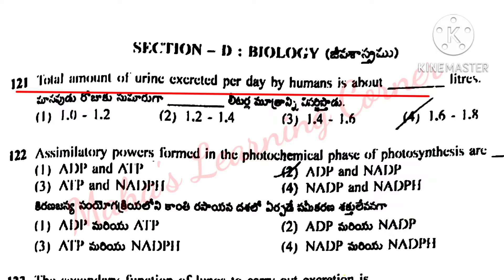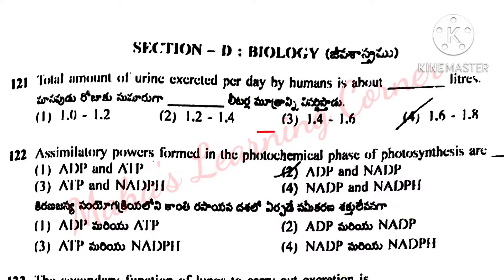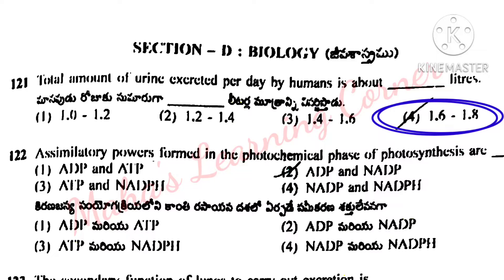Total amount of urine excreted per day by humans is about dash liters. Options: 1.0 to 1.2, 1.2 to 1.4, 1.4 to 1.6, 1.6 to 1.8. Correct answer is option 4: 1.6 to 1.8.